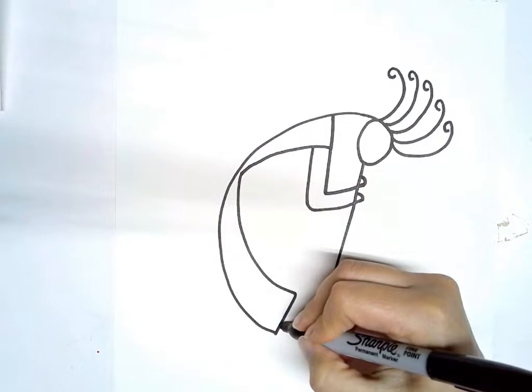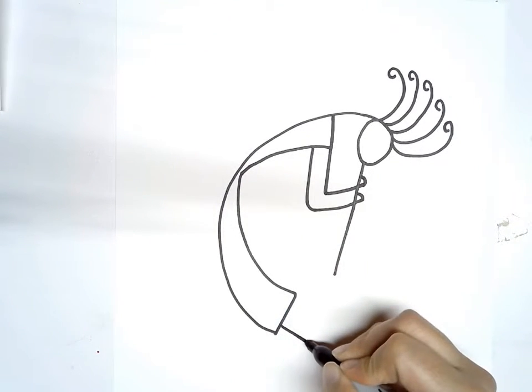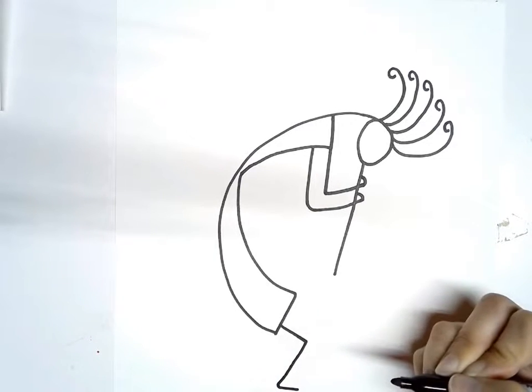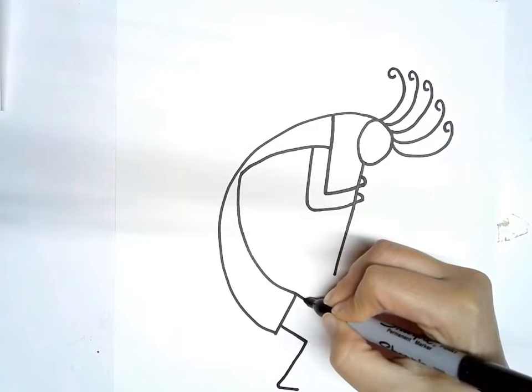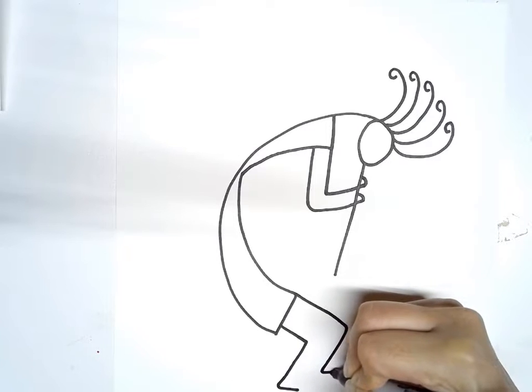And then we're going to make the legs come out the bottom. It's going to go out and then angle down and make a foot. Same thing. This one's going to come right out of the top of this triangle, come out, angle down, and make a foot.